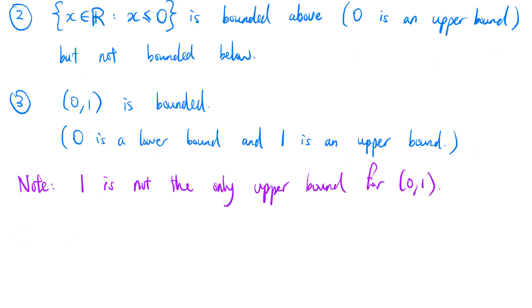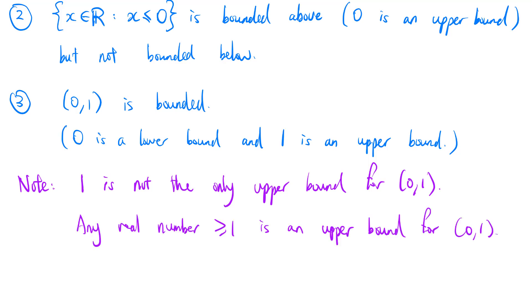Note that 1 is not the only upper bound for (0,1). In fact, any real number which is greater than or equal to 1 is an upper bound for (0,1). So in some sense, 1 is the smallest upper bound.